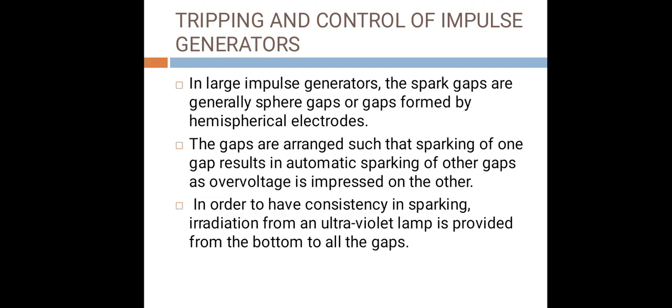In large impulse generators, the spark gaps are generally sphere gaps or gaps formed by hemispherical electrodes. The gaps are arranged such that sparking of one gap results in automatic sparking of other gaps as overvoltage is impressed on the other.